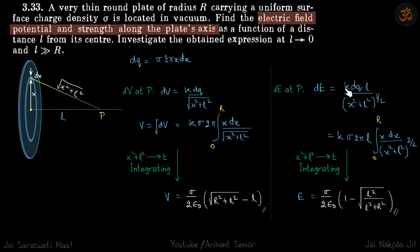Field at P should be k q x by x square plus L square power 3 by 2, which is a standard result for a field due to a ring.